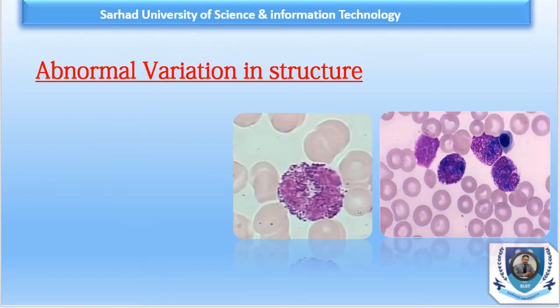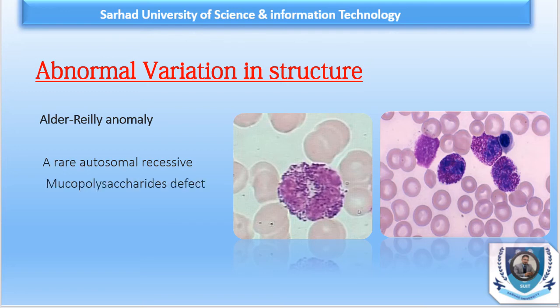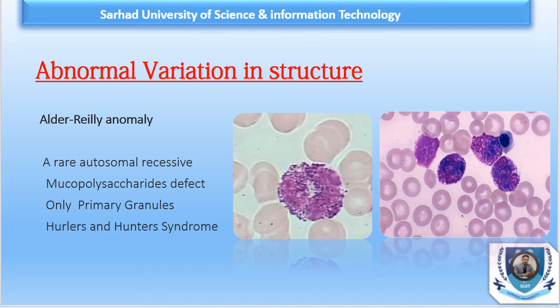The next variation is Alder-Reilly anomaly, a much rarer inherited anomaly formed as a result of abnormal polysaccharide metabolism, which prevents the formation of secondary specific staining granules. In these individuals, only primary azurophilic granules are present, while nuclear maturation and segmentation remain normal. The presence of Alder-Reilly anomaly is often associated with certain diseases such as Hurler and Hunter syndrome, and it produces a shortened lifespan. It is inherited as an autosomal recessive trait due to mucopolysaccharide defects.